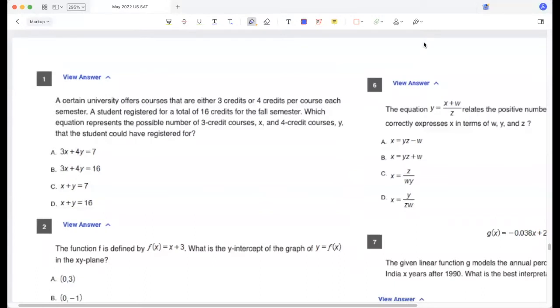A certain university offers courses that are either three credits or four credits per course each semester. A student registered for a total of 16 credits for the fall semester. Which equation represents the possible number of three credit courses X and four credit courses Y that the student could have registered? The total number of credits from X courses is 3X, and total number of credits from Y courses is 4Y, which should be 16. So 3X plus 4Y equals 16.